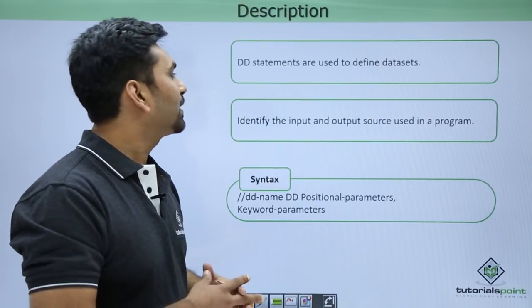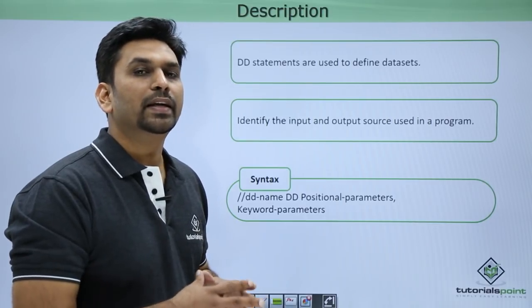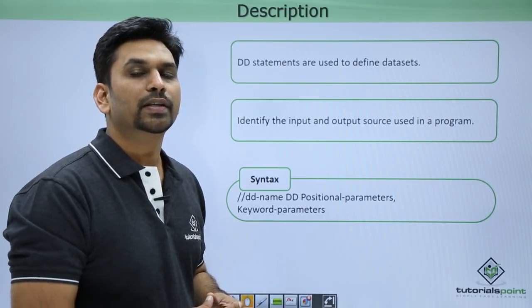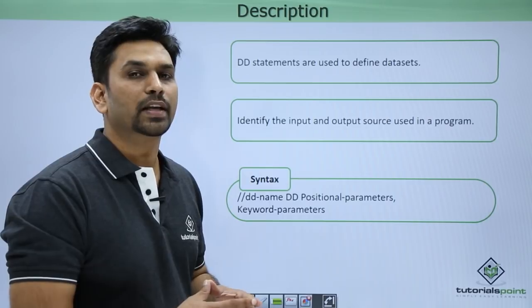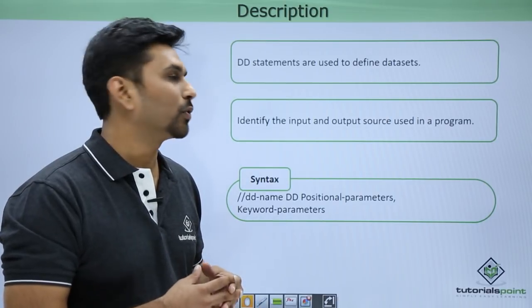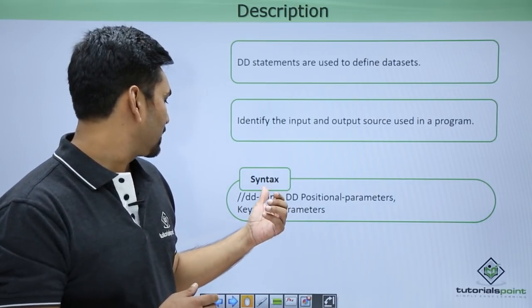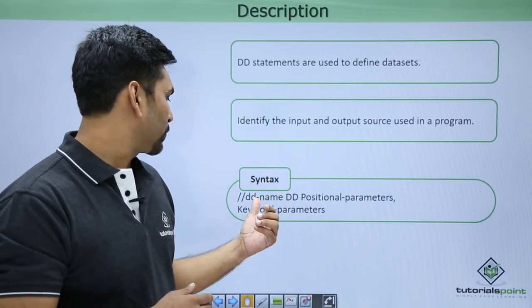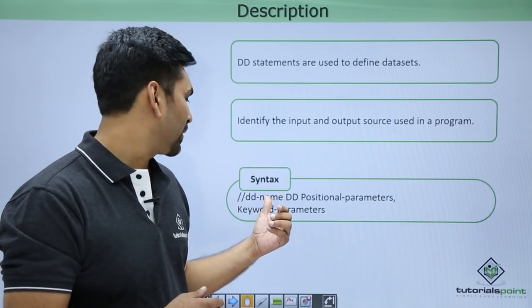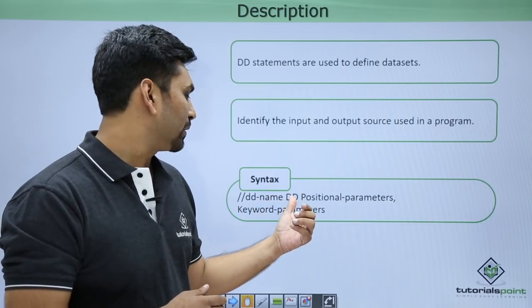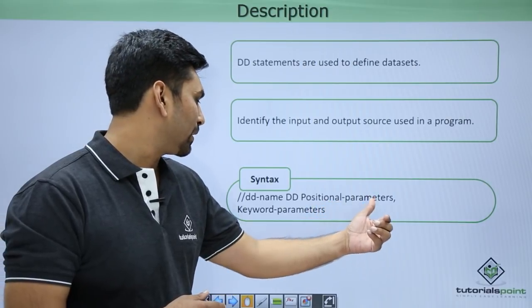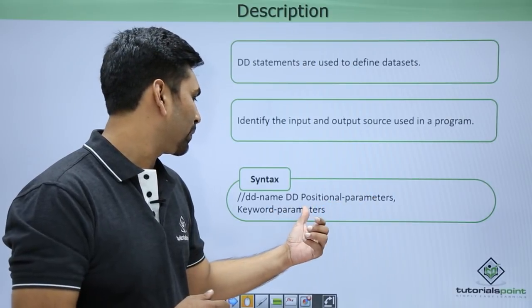So what is a DD statement? DD means data definition. A DD statement is used to define datasets, whether it is an input dataset or whether it is an output dataset. Here you need to mention the DD name — you can use any name. Then this is the keyword DD, followed by positional parameters and keyword parameters.